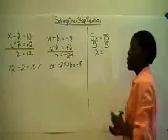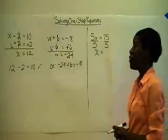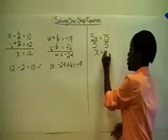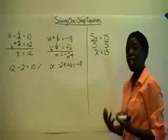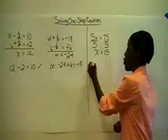So we have x is equal to, and then we evaluate 75 divided by 5. It is 15. And again, it's a good practice to always check your work.